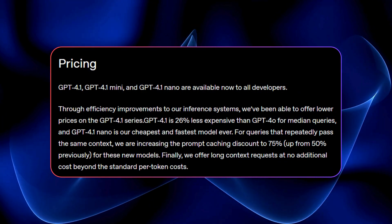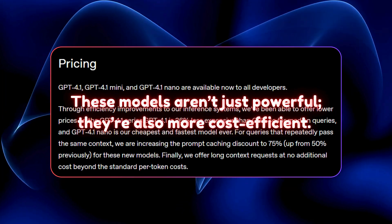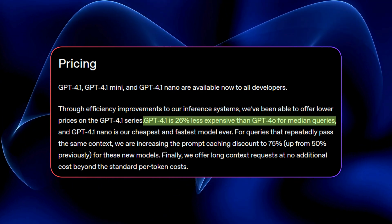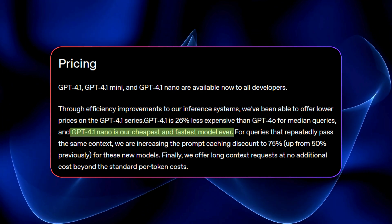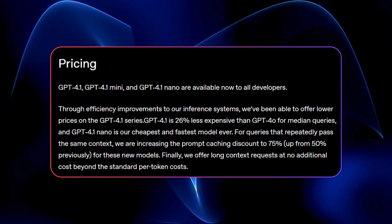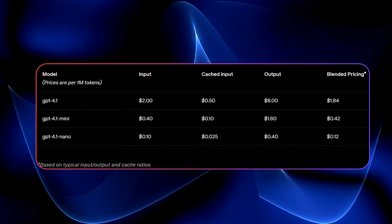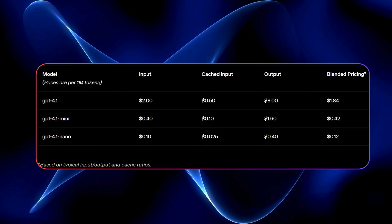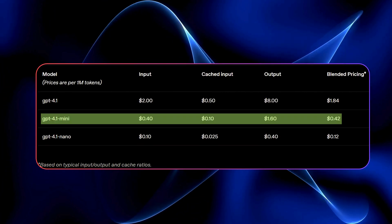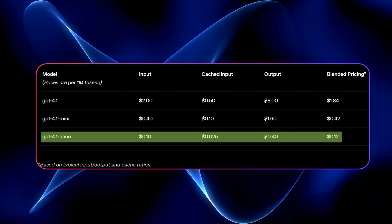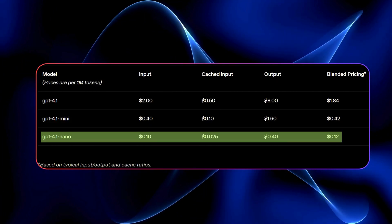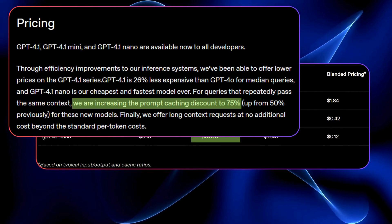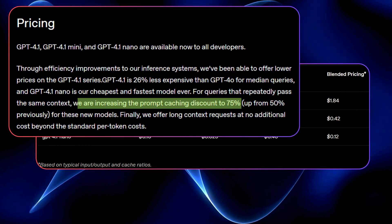Alright, let's talk about the bottom line: cost. These models aren't just powerful — they're also more cost efficient. GPT 4.1 is 26% cheaper than GPT 4.0 for median queries, and GPT 4.1 Nano is not just the cheapest but also the fastest. Here are the prices: GPT 4.1 is $2 per million tokens for input and $8 for output. GPT 4.1 Mini is $0.40 for input and $1.60 for output. GPT 4.1 Nano is $0.10 for input and $0.40 for output. Also, cached input prices have dropped even further, with discounts reaching 75% on input and even more for batch queries.